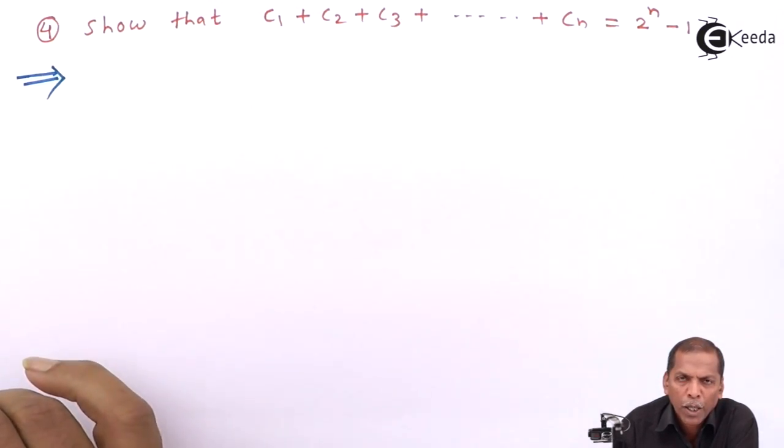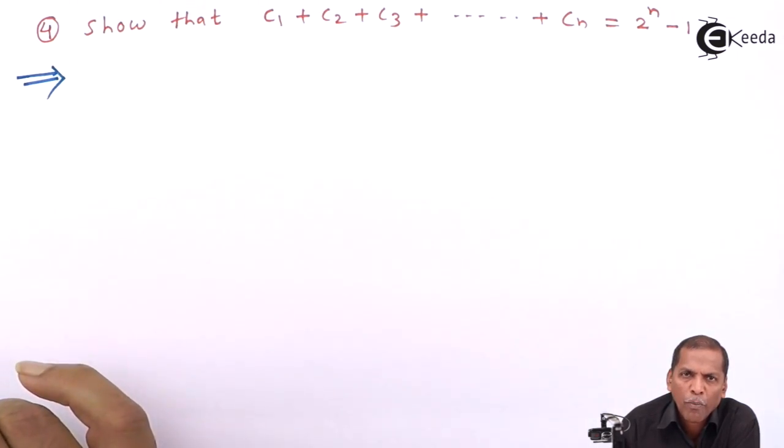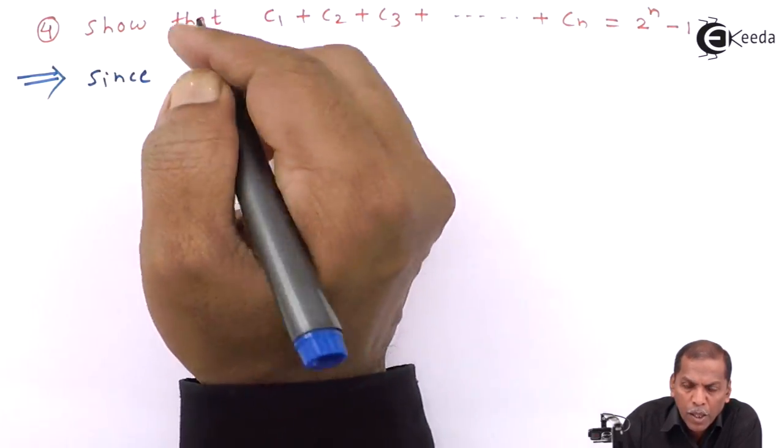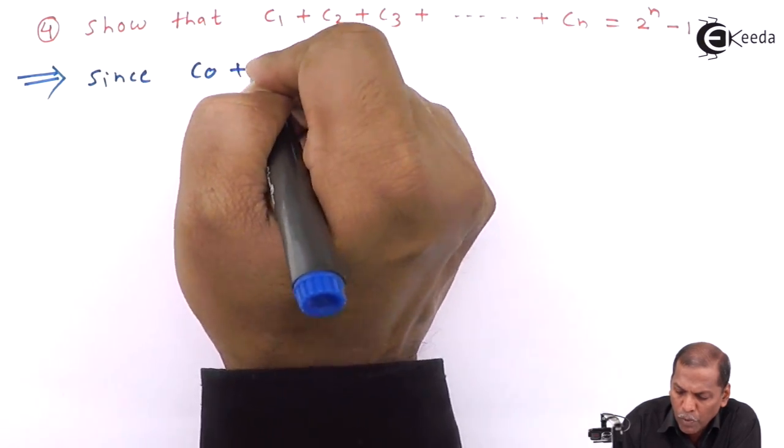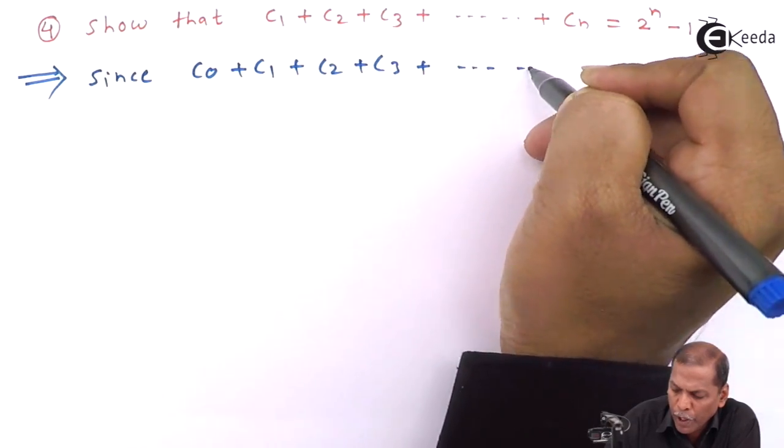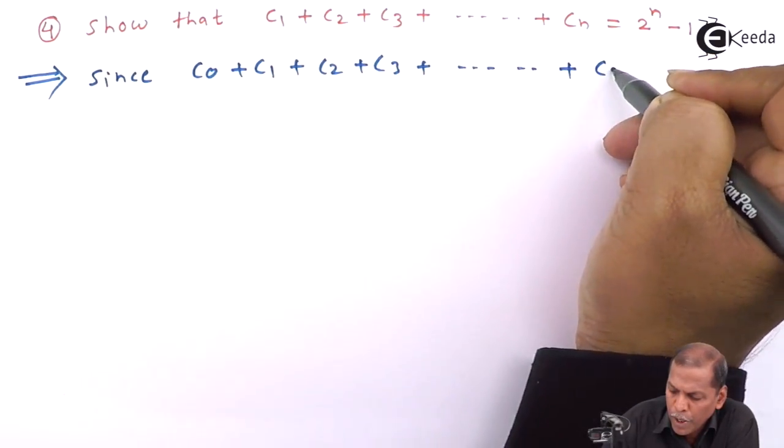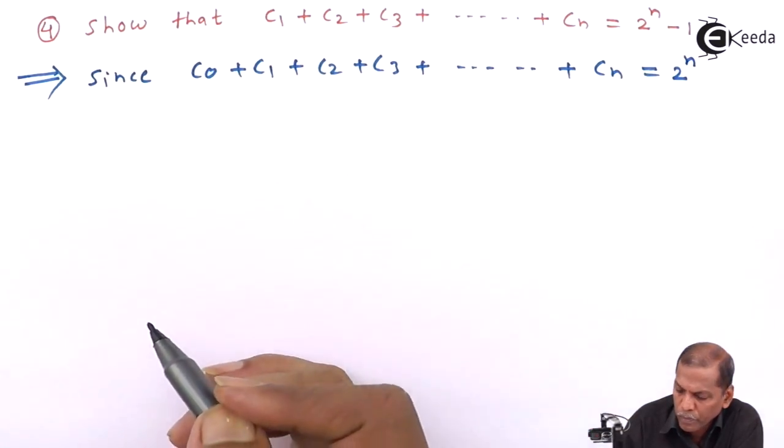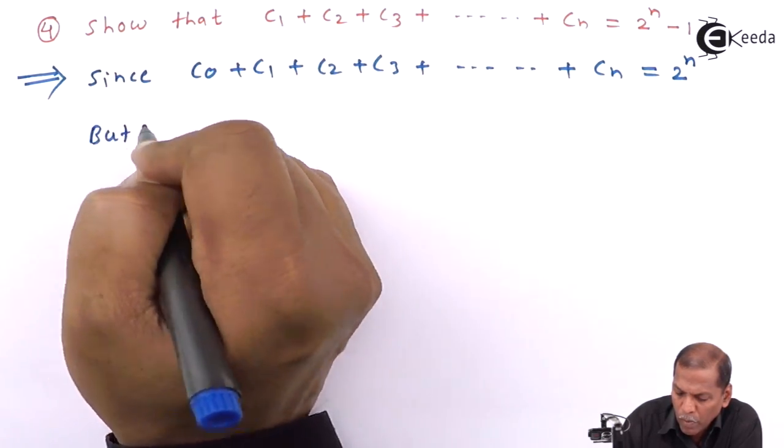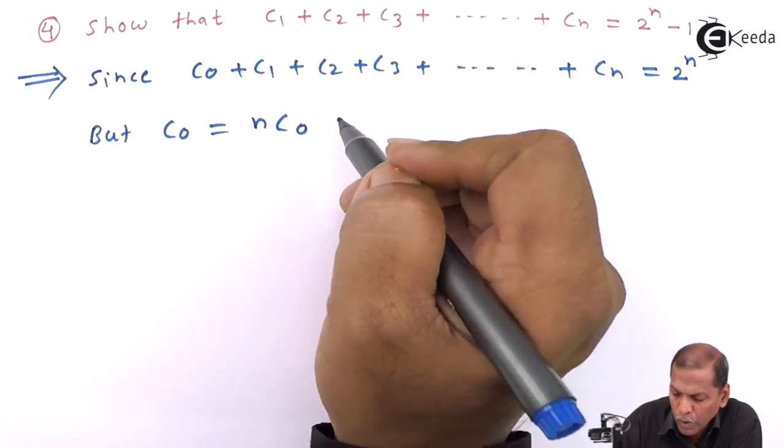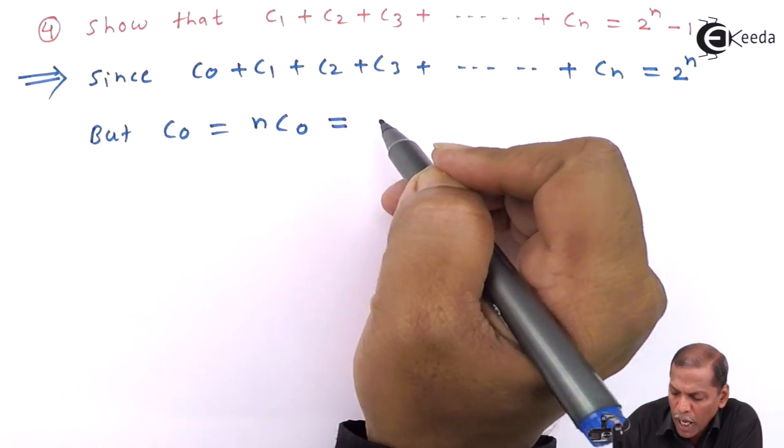The solution is quite simple. Here we use the first result which is based on binomial coefficients. Since we have C0 plus C1 plus C2 plus C3 going on plus Cn, that equals 2 raised to n. But C0 is the same as nC0, and that gives us answer 1.